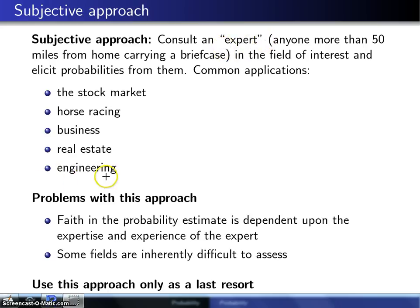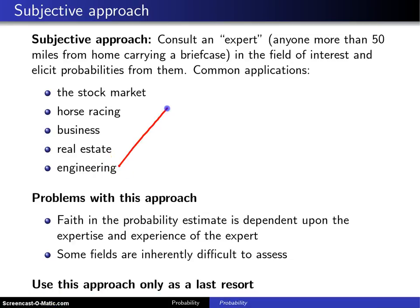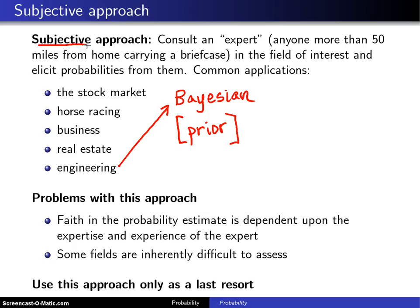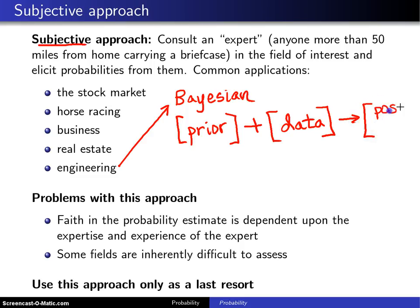This also applies in engineering. One approach that has gotten quite popular in engineering and other fields is the Bayesian approach. In this case, you come up with a prior distribution, which is often a very subjective thing. Then, after the prior distribution has been established, you collect some data, and from that prior distribution and the data, you arrive at what is known as a posterior distribution.